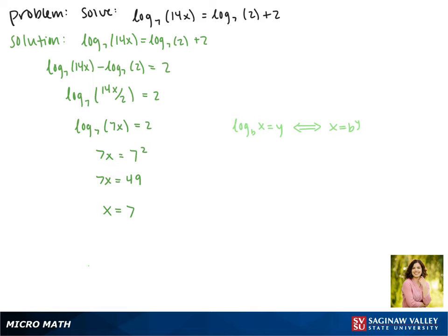Now we have to check to see if the solution is extraneous. So plugging in x equals 7 gives us log base 7 of 14 times 7 equals log base 7 of 2 plus 2. Since the argument of this log is still positive, that means that this is a solution to our equation.